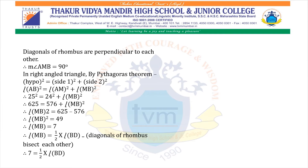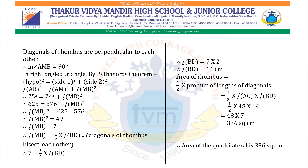Since diagonals of a rhombus bisect each other, MB = half into BD. Therefore, 7 = half into BD, so BD = 14 cm. Area of rhombus = half into AC into BD = half into 48 into 14 = 48 into 7 = 336 square centimeters. Therefore, area of quadrilateral is 336 square centimeters.